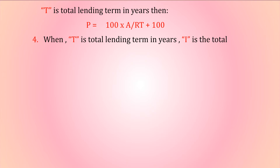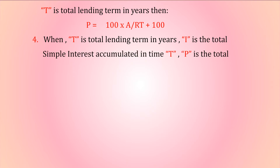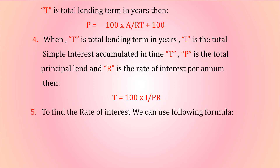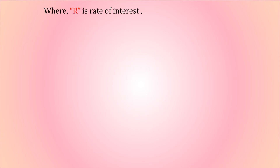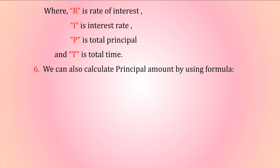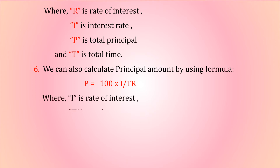T is the total lending term in years, I is the total simple interest accumulated, P is the total principal lent, and R is the rate of interest per annum. To find time: T = 100 × I / (P × R). To find the rate of interest: R = 100 × I / (P × T), where R is the rate of interest, I is interest, P is total principal, and T is total time. To find principal: P = 100 × I / (T × R).